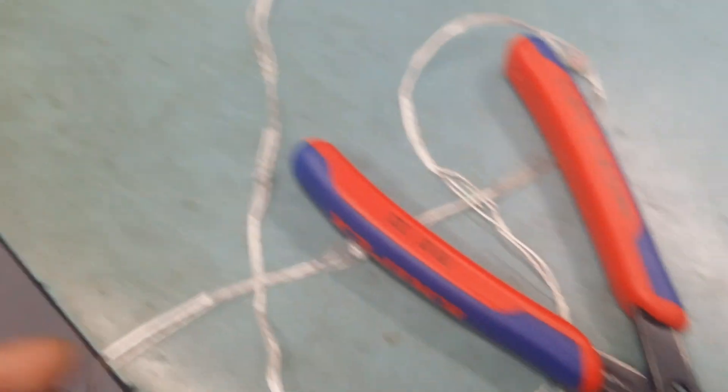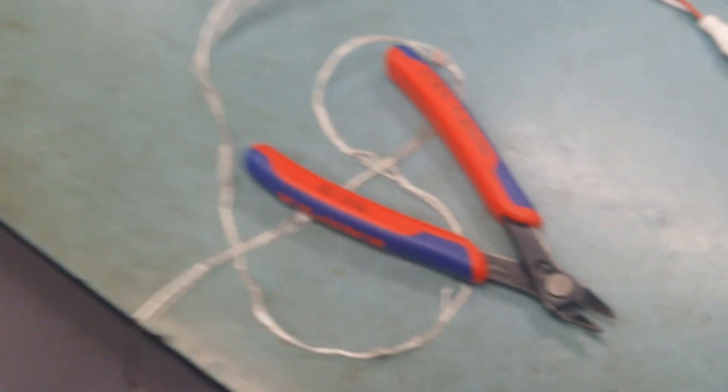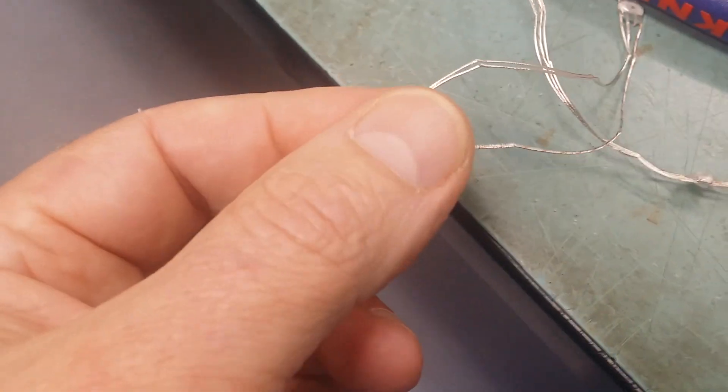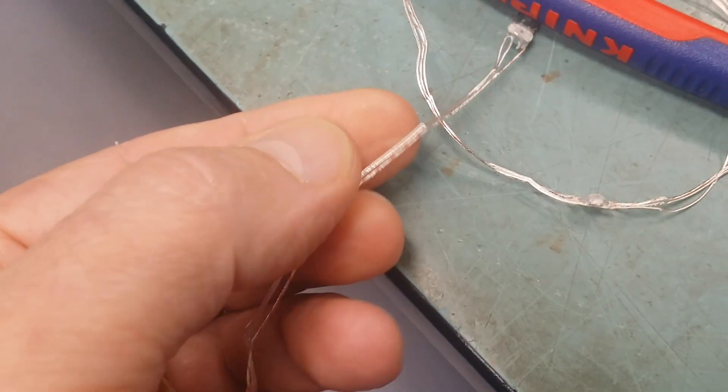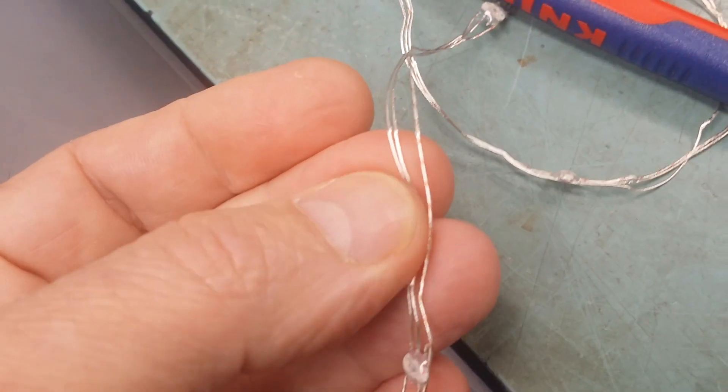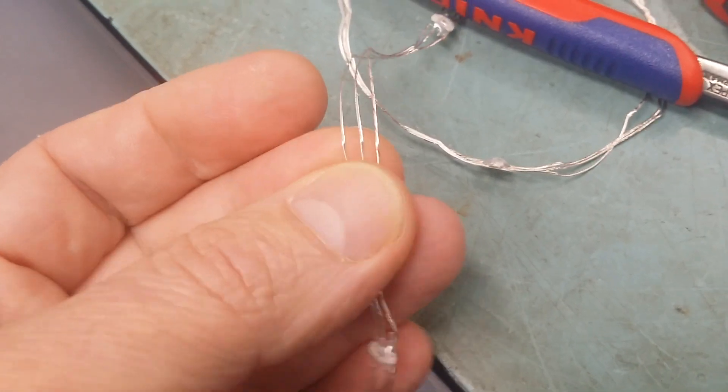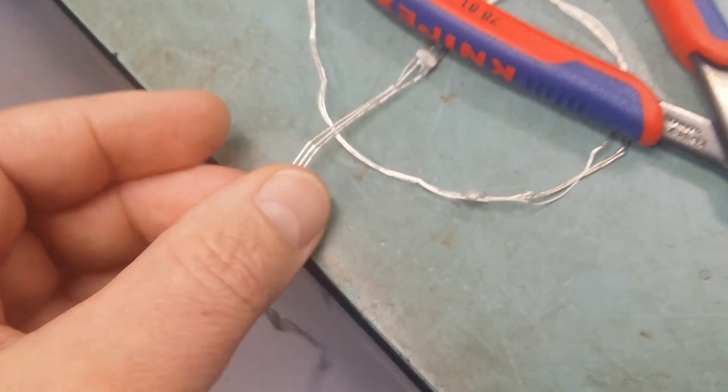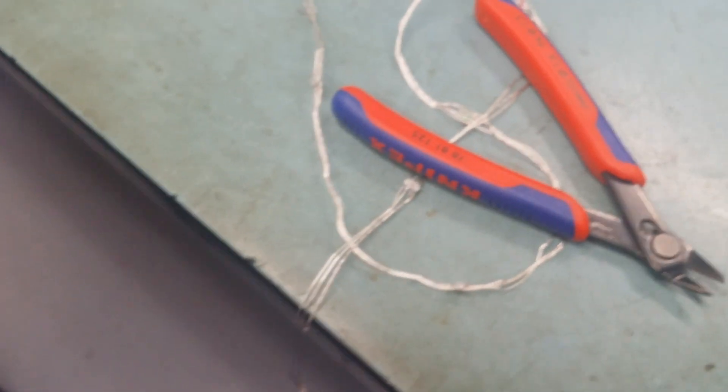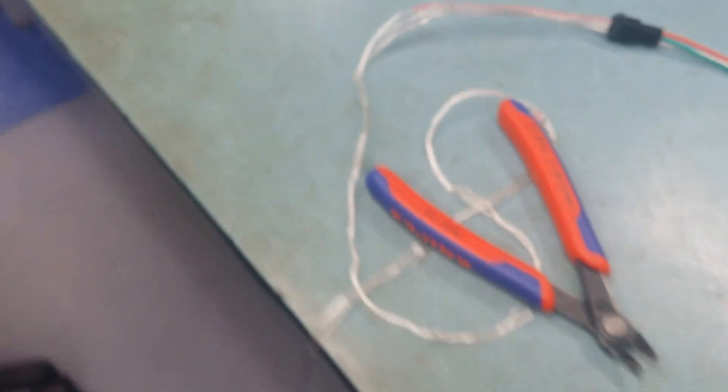Anyway, it comes as a 5 meter length with very fine wires there, sort of tinned wires, stranded wires with a clear coating on them. I don't know if I'd use them outside, the UV would probably attack them. I'll just turn them on.